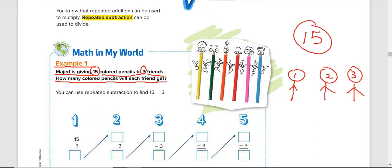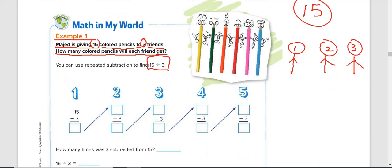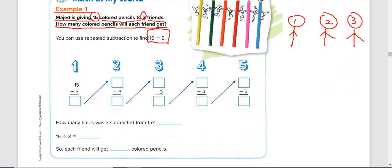And Majid has 15 colored pencils to give to these three friends. So to find how much each of them will get, what do we do? Very easy. All we need to find is 15 divided by 3. Now, at this stage without using a calculator, one of the steps or one of the ways of doing this is by following the procedure of subtraction.